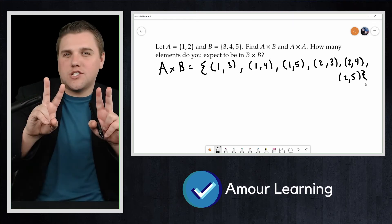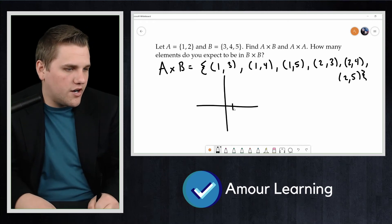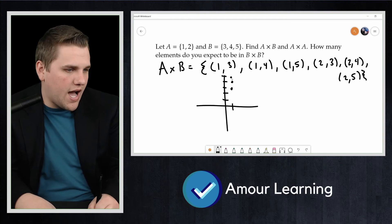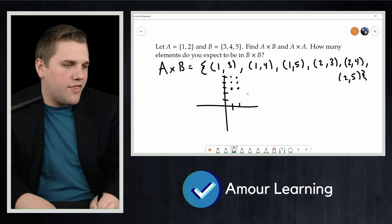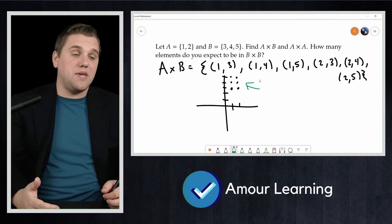So if you were to graph what this coordinate plane would look like, it would look like this. There's (1,3), (1,4), and (1,5). And then there's (2,3), (2,4), and (2,5). That right there, those six dots, represents A cross B.